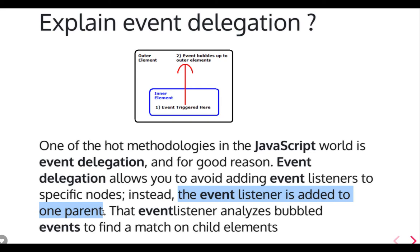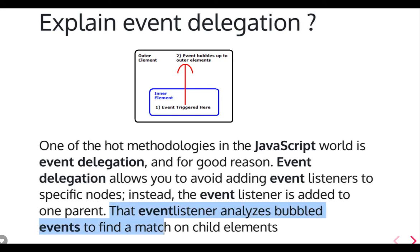Consider you have a ul and li — an unordered list. You want to apply a click event on a particular li node. Instead of doing that, you can just put a click event or whatever the change event on the ul tag, which is the immediate parent of all the li tags. You already know that whenever an event is applied on the li, it will bubble up to the parent node. So it's better to handle that on the parent node — the event listener can be added to the parent. The event bubbles up, and you are actually handling it at the ul tag. At that point, you can find the index of the child element and do the particular calculation.